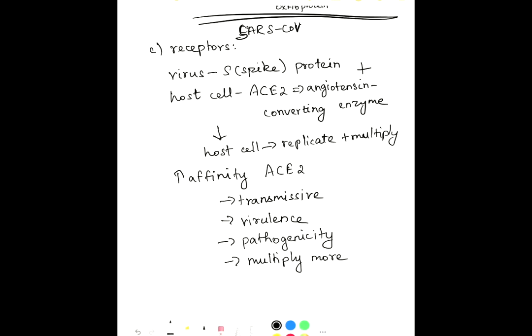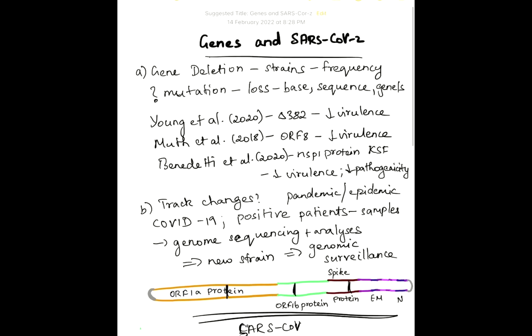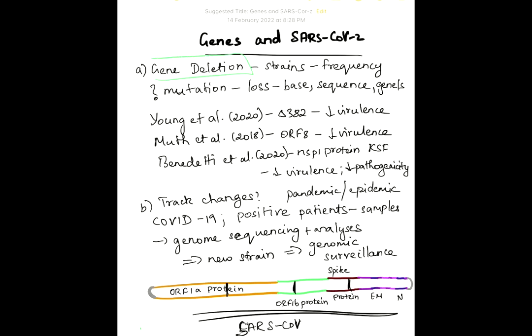In today's topic on genes and SARS-CoV-2 virus, we saw what gene deletion is and the impact of gene deletion, which occurs at increased frequency to create more strains, usually resulting in deletion of particular genes. A few evidences show that most of the time this results in decrease of virulence. We also discussed how to keep track of such variations in the population of the virus, a process known as genomic surveillance.